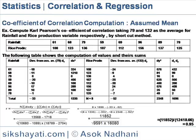Computing further, the numerator is 11852. The denominator is the square root of 9591 multiplied by 1680, which equals 12418.66. Therefore r = 11852 / 12418.66, which comes to approximately 0.95. This value is quite near to 1 and is positive, indicating a strong positive correlation between the two variables.